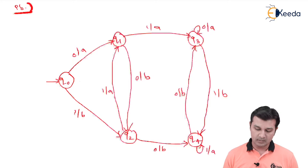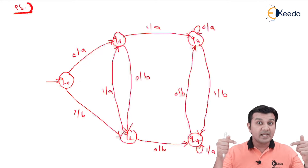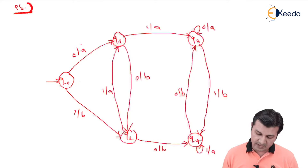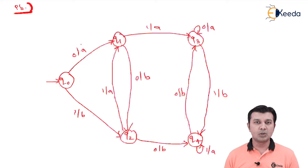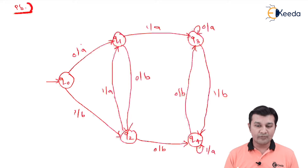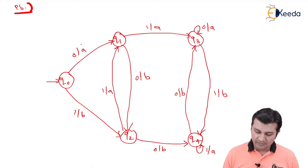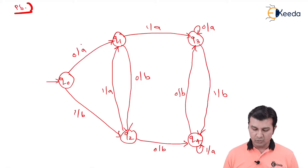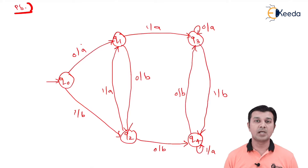Let's move on to q1. Looking at all incoming edges to q1, I see one incoming edge is 0/a and another is 1/a. Both incoming transitions carry output a — slash a, slash a. Since all incoming transitions to q1 produce output a, we assign output a to state q1. For q2, I see 1/b and 0/b as incoming transitions — slash b, slash b — so all incoming transitions to q2 produce output b. Therefore I assign output b to q2.